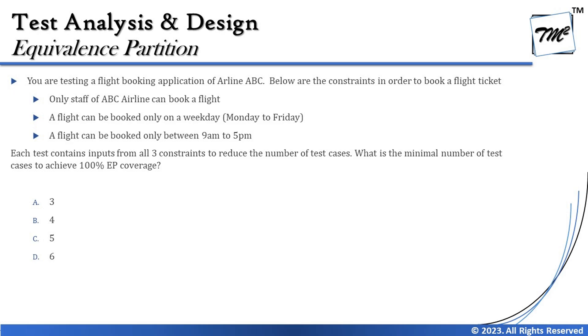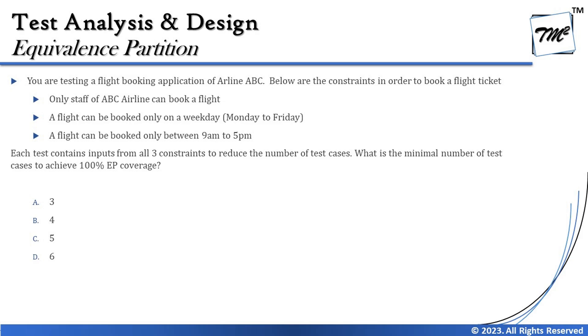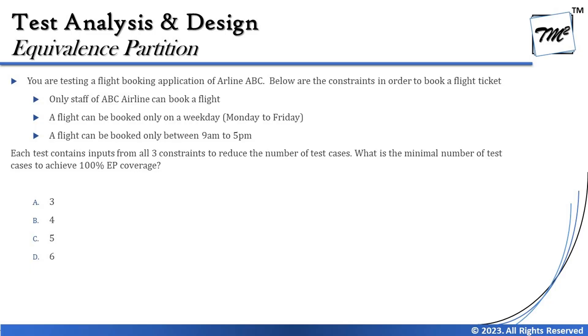The next question is: you are testing a flight booking application for airline ABC. The constraints to book a flight are: first, only staff of ABC airline can book a flight — so we have two categories: staff and non-staff. Second, a flight can only be booked on a weekday (Monday to Friday), making weekday a valid input and weekend (Saturday and Sunday) an invalid input — again two partitions.